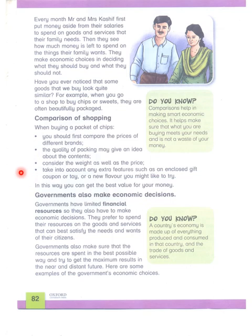For example, a chips wrapper — it may be possible that the wrapper is very beautiful, but the chips are very little. So you must first compare the prices, then see how much the weight is, the quantity, and the quality of packing. Also take into account any extra features such as an enclosed gift, coupon, toy, or a new flavor you might like to try. In this way, you can have different choices and get the best value for your money.